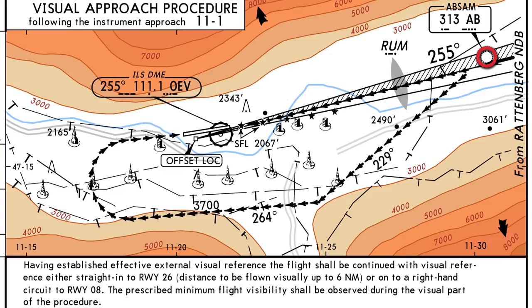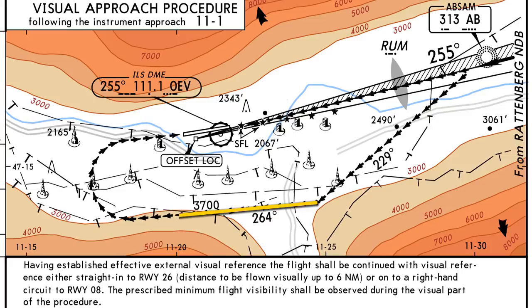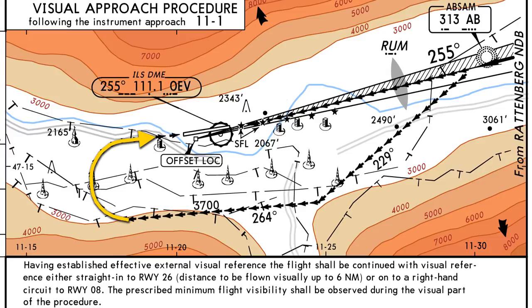As we reach the ABSAM NDB, we'll turn to a heading of 229 until we get close to the mountains. As we get close, we'll turn to a heading of 264, which will be parallel to the runway — effectively a downwind leg of a traffic pattern. We'll slowly descend to or maintain 3,700 feet and complete our pre-landing checklist with landing gear down. The only thing left is that 180 degree turn onto the final, very reminiscent of the turn done at Paro Airport. We are in a confined area, and this turn has to be done at specific airspeeds. If we're too fast, we're not going to make the turn.